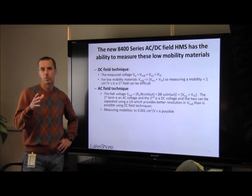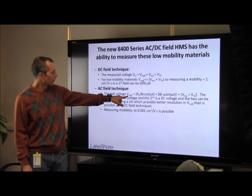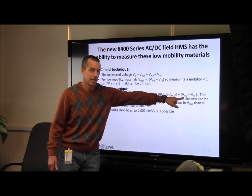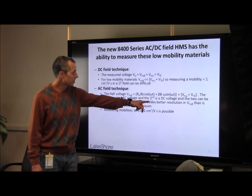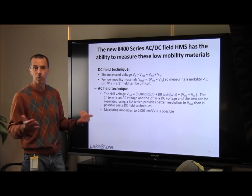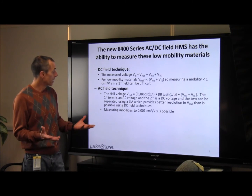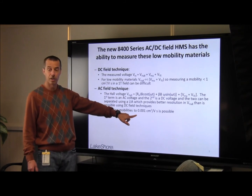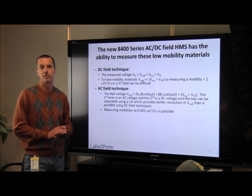In the AC field technique, we vary the magnetic field sinusoidally at a few tenths of a hertz. In this case, the Hall voltage has both an AC term and a DC term, where the DC term is again the misalignment and thermoelectric voltages discussed previously. These two terms can be separated using a lock-in amplifier, which provides vastly superior resolution in the Hall voltage measurement, and in turn equates to much better resolution in the mobility determination. Using this AC field technique, we can measure mobilities as low as 0.001 centimeters squared per volt-second, which is approximately 1,000 times lower than is possible using traditional DC field techniques.